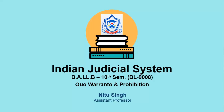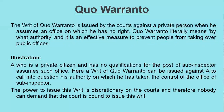Hello everyone, this is me, an assistant professor at Indra Prastha Law College. In this lecture we are going to study these two writs: Quo Warranto and Prohibition. So let's start. Firstly, what is Quo Warranto? The writ of Quo Warranto is issued by the courts against a private person when he assumes an office on which he has no right. Quo Warranto literally means 'by what authority,' and it is an effective measure to prevent people from taking over public offices.